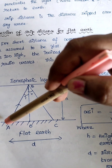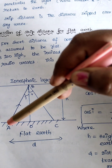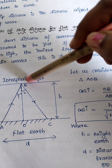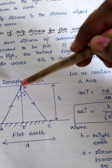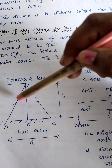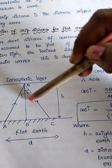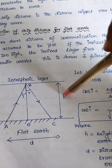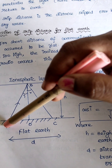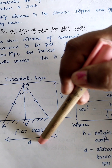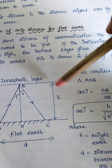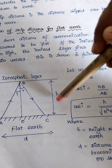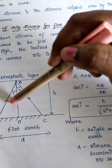Consider transmitting a signal from point A to point C. Point B is considered as the ionospheric layer. Here the angle of incidence is indicated by I. The distance between the ionospheric layer and the surface is the height H. The distance between A and C is indicated by D — this is the skip distance D, and the height of the ionospheric layer is H. Now we are going to calculate the skip distance for this flat earth.